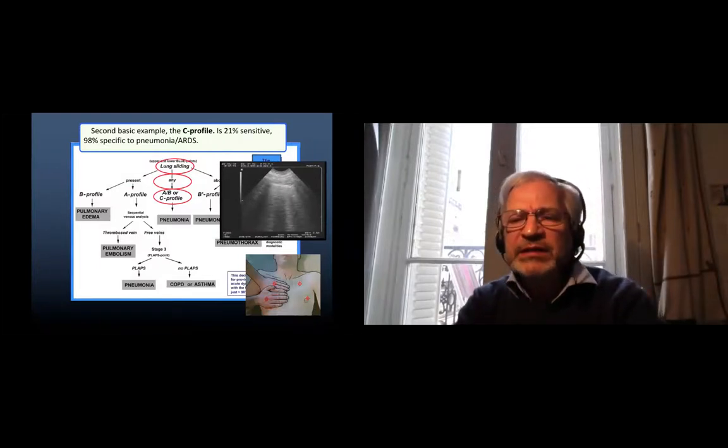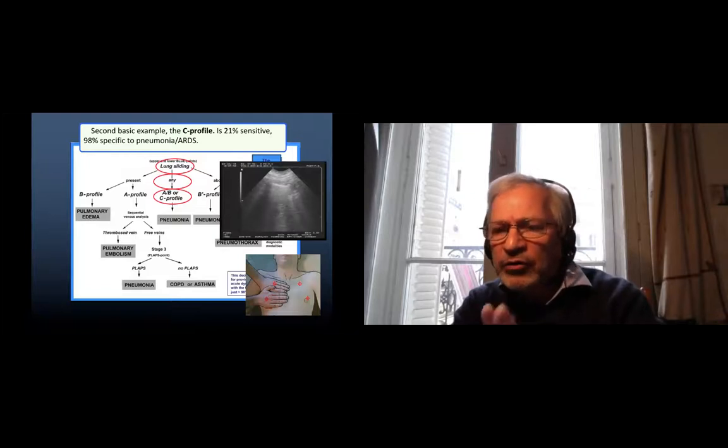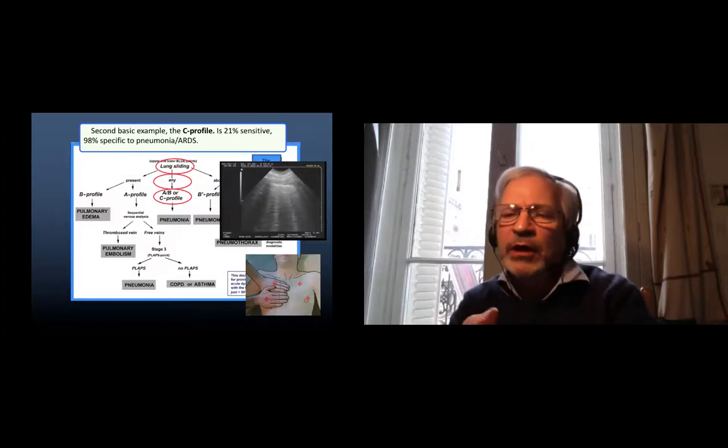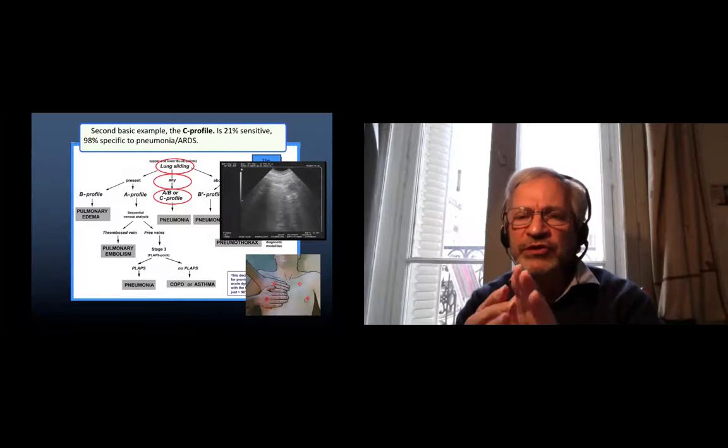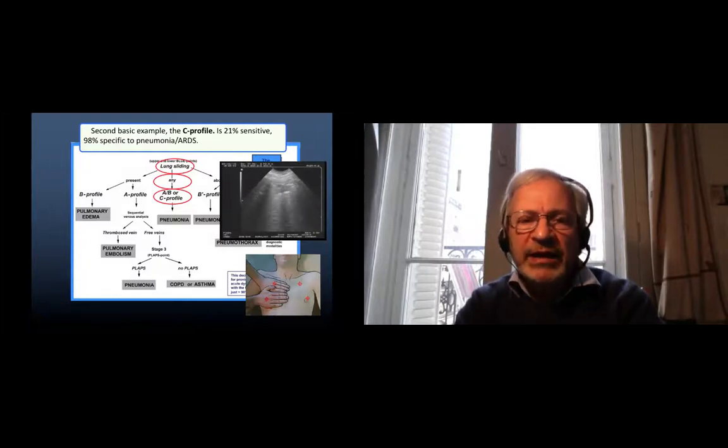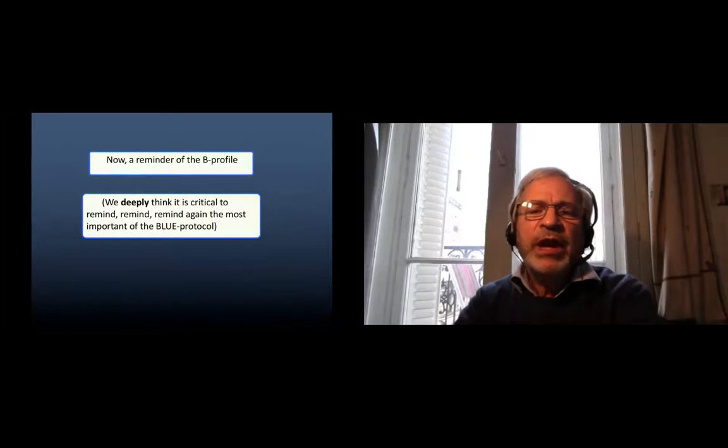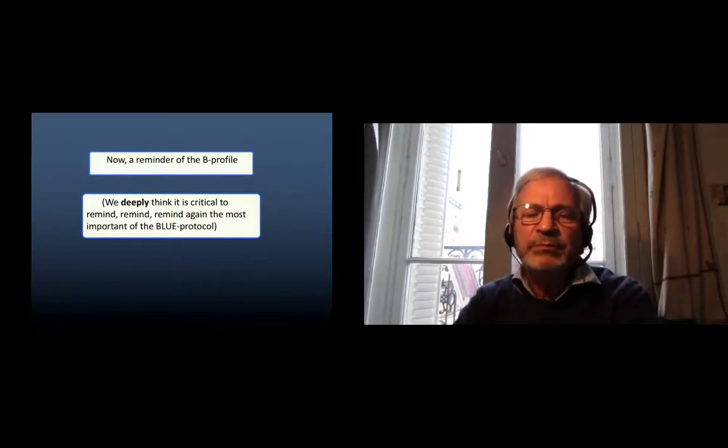In this slide we can see the second basic example, which is the C profile, where I can see not only B-lines but also a subpleural, of course, small lung consolidation. It is anterior. This is the C profile which is 98% specific to pneumonia and ARDS.